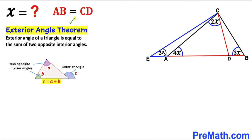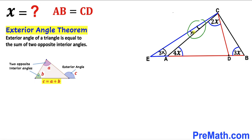Let's recall the exterior angle theorem: the exterior angle of a triangle equals the sum of the two opposite interior angles. In our case, angle CAD which is 4x is the exterior angle of triangle ACE, and it equals the two opposite interior angles — angle ACE plus angle AEC. Since angle AEC is 3x, angle ACE must be x. So angle ACE turns out to be x.